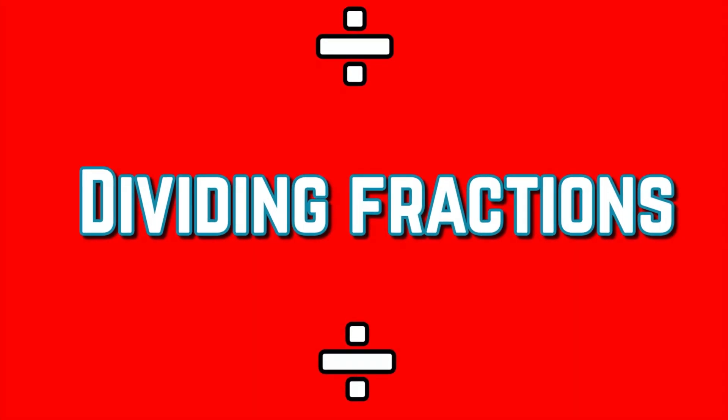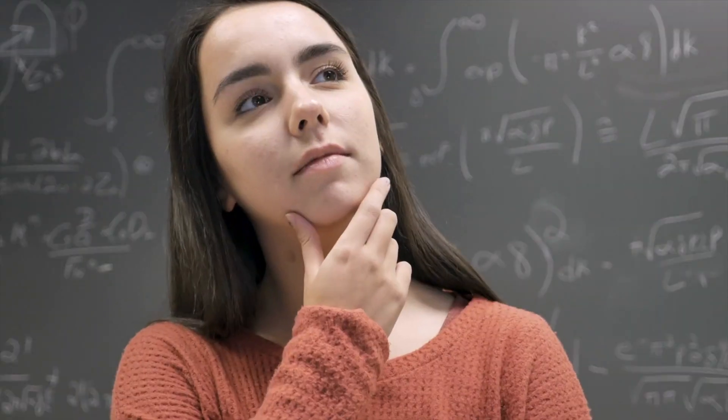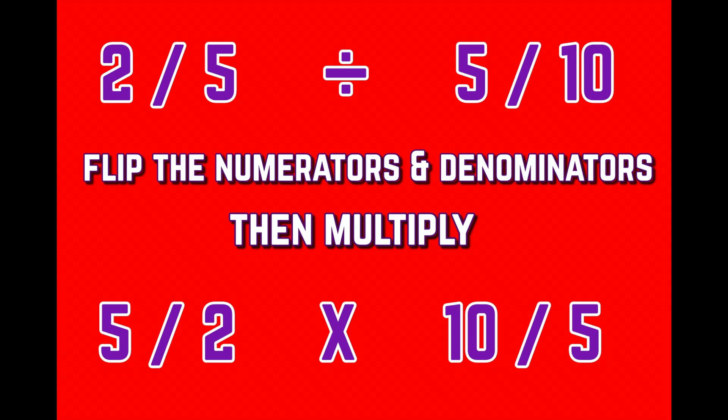Now we're moving on to division. This happens really quick, so I hope you pay attention. First you take the numbers of the fraction and you flip them. Then you multiply and get your answer for division. How about that?